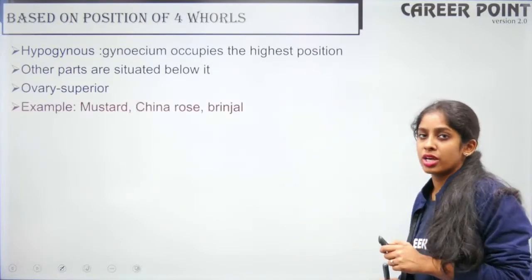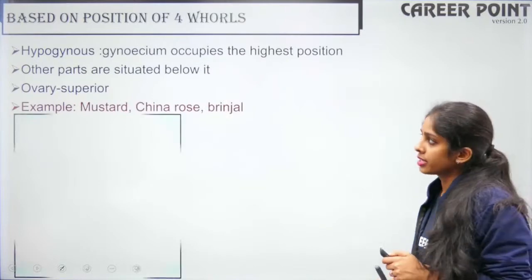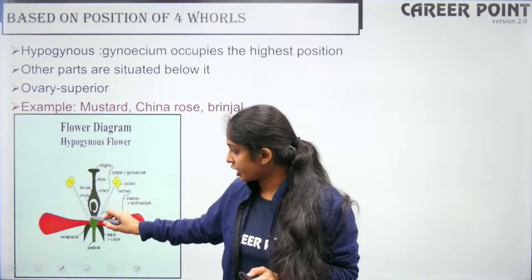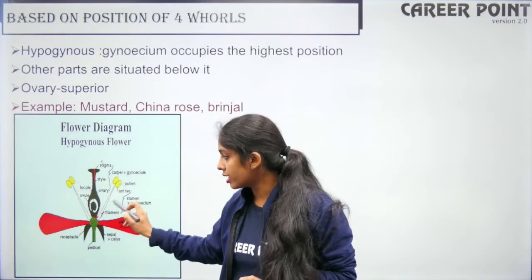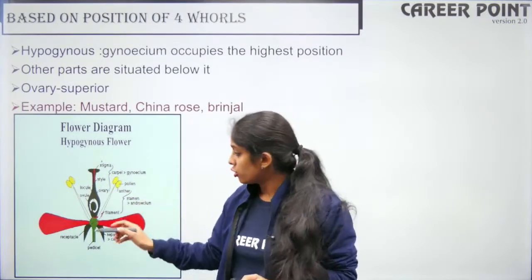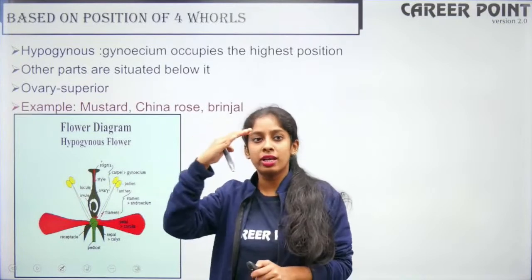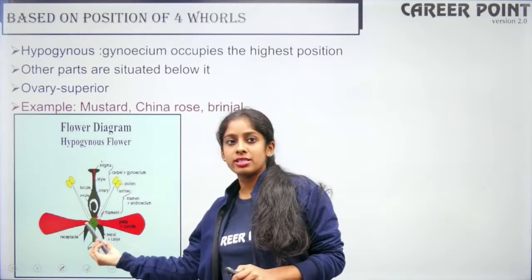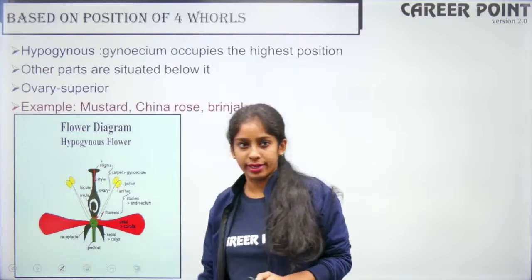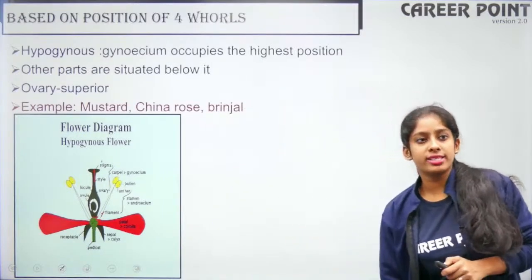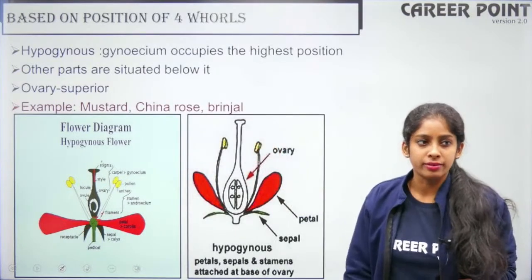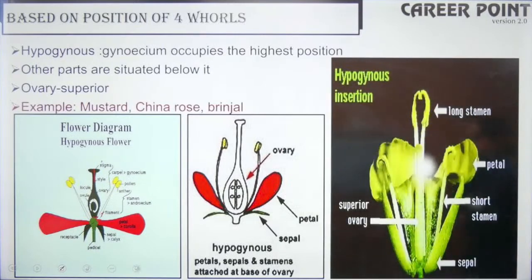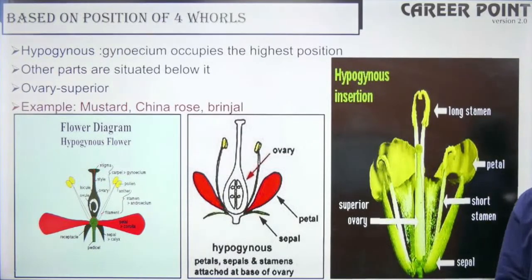In the hypogynous flower, the gynoecium is at the top and all other parts — stamen filaments, petals and sepals — start from a level below the gynoecium. That is why the ovary is said to be superior. You can see the superior ovary in the real flower image.